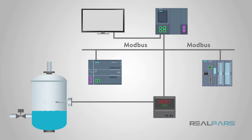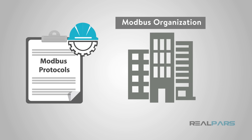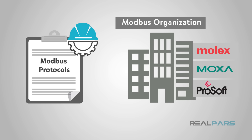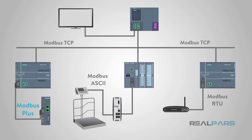Modbus provides a common language for devices and equipment to communicate with one another. For example, Modbus enables devices on a system that measures temperature and humidity connected on the same network to communicate the results to a supervisory computer or PLC. The development and update of Modbus protocols are managed by the Modbus Organization, an association of users and suppliers of Modbus-compliant devices. Several versions of the Modbus protocol exist for serial port and Ethernet, and the most common are Modbus RTU, Modbus ASCII, Modbus TCP, and Modbus Plus.